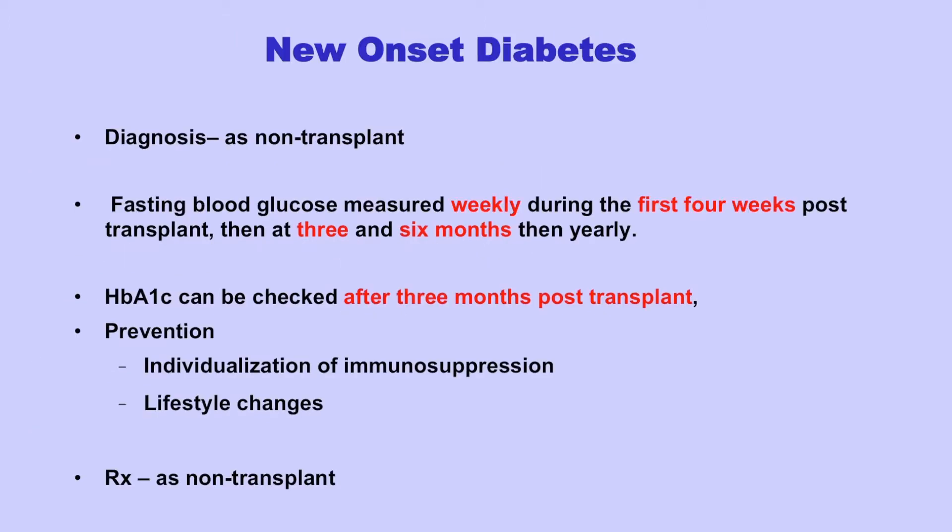Diagnosis is the same as a non-transplant patient. When to check fasting blood glucose: for people who are not diabetics — really trying to diagnose new-onset diabetes — it should be measured weekly for the first four weeks post-transplant, then at three and six months, and then yearly. But this is not for someone who is already an established diabetic. Hemoglobin A1c can be checked after three months post-transplant. Prevention is important, which includes individualization of immunosuppression and lifestyle changes.